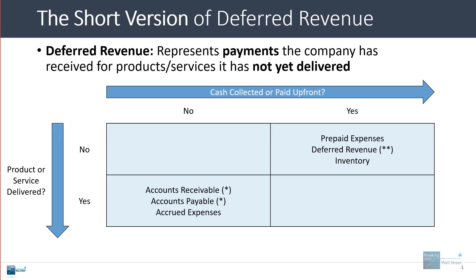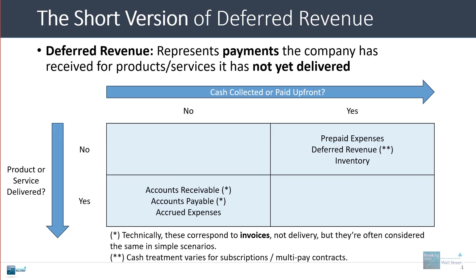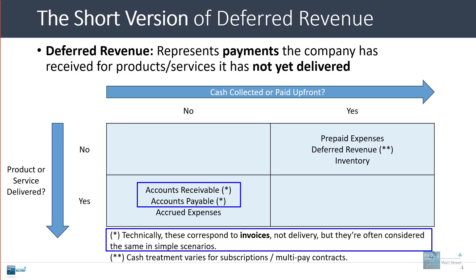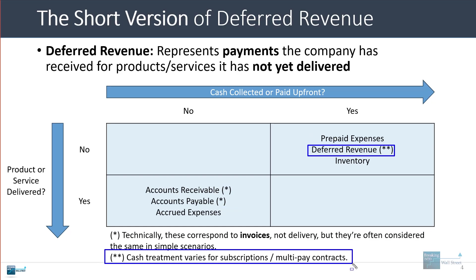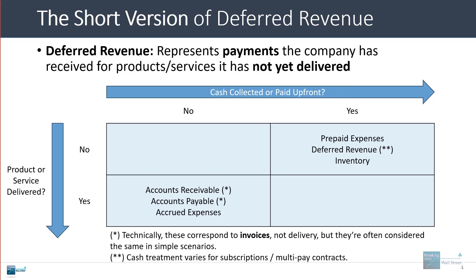I've added footnotes here because technically accounts receivable and accounts payable are supposed to correspond to invoices, not delivery. But in simple scenarios, people normally consider invoices and delivery to be about the same. Deferred revenue has a double star because the cash treatment here can vary a little bit — it's not always for cases where the entire cash balance has been collected or paid up front.